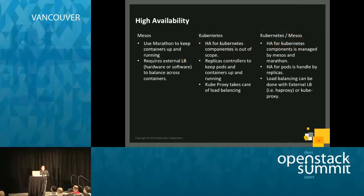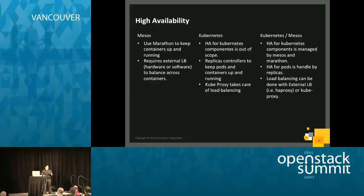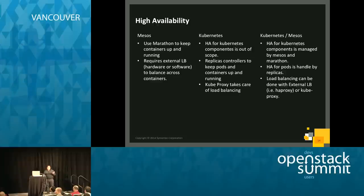For high availability: with Mesos only, you use Aurora or Marathon to keep containers up and running, but you need HAProxy or a load balancer in front. Kubernetes has its own HA components — the proxy, replicas, and controllers. The Kubernetes-Mesos combination provides HA for all Kubernetes components through Marathon, plus load balancing through either HAProxy or the Kubernetes proxy.